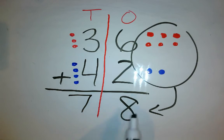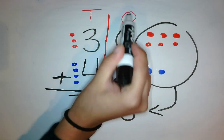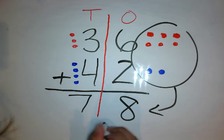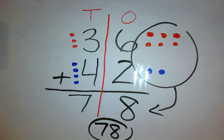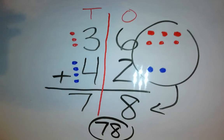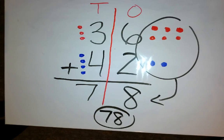So I have my number 7 and 8. 7 tens, 8 ones. And that's going to equal out to be the number 78. There we go. 78.